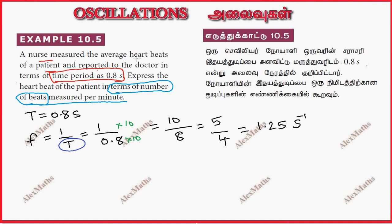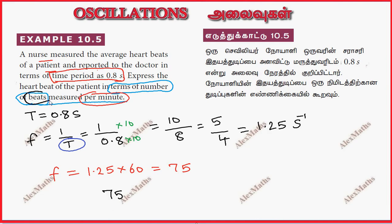But the question asks for per minute. So per minute, one second is 1.25 beats. Therefore, beats per minute equals 1.25 multiplied by 60. This total is 75. The answer is 75 beats per minute.